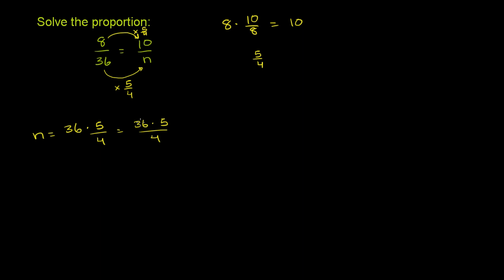Now, 36 divided by 4 — we can divide both the numerator and the denominator by 4. Divide the numerator by 4, you get 9; divide the denominator by 4, you get 1. So you get 45. That's one way to think about it: 8 over 36 is equal to 10 over 45.